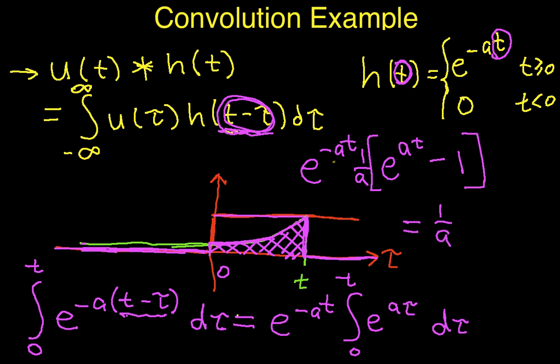And when I multiply these guys out, I get 1 over a. The e to the minus a t times e to the a t is 1 minus e to the minus a t.